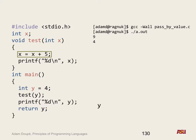So we have a program: main sets y equal to four, calls test(y), prints out the value of y, then returns y. In our test function, we take in a parameter x, set x equal to x plus five, and print out x. What is this program going to output? Nine and then four.